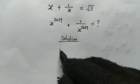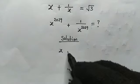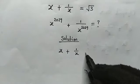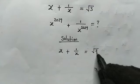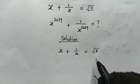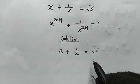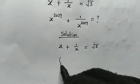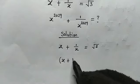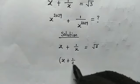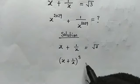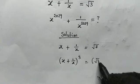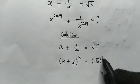From the given equation, we have x plus 1 over x equals root 3. Now let's go ahead and cube both sides of this equation. So here we have x plus 1 over x, all cubed, equal to root 3 cubed.